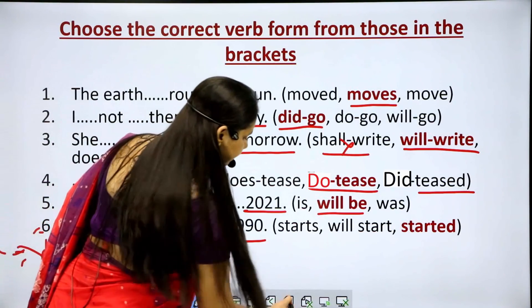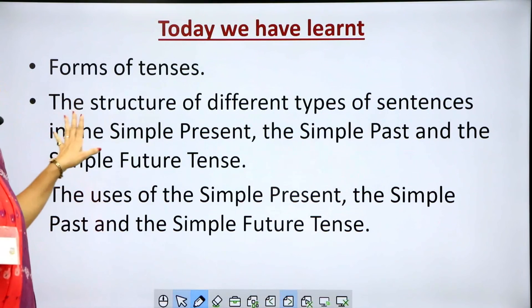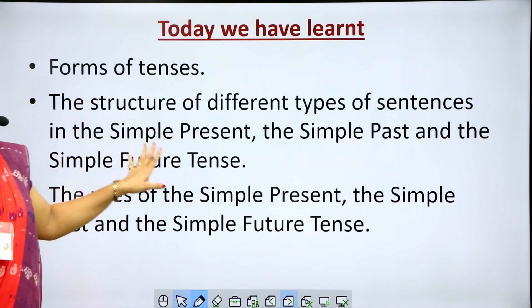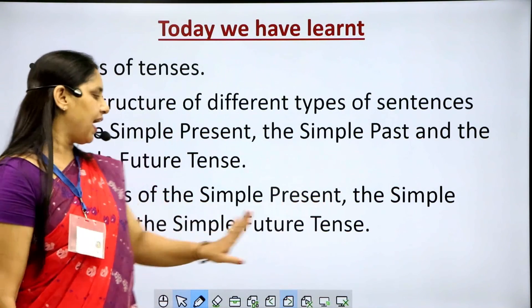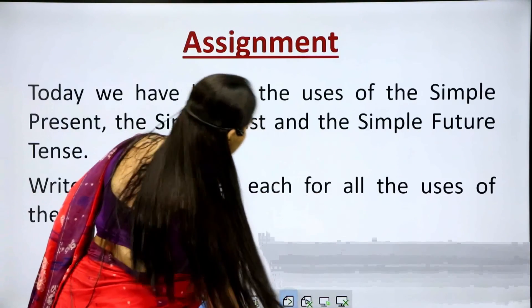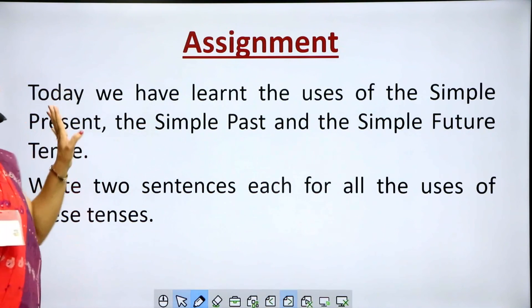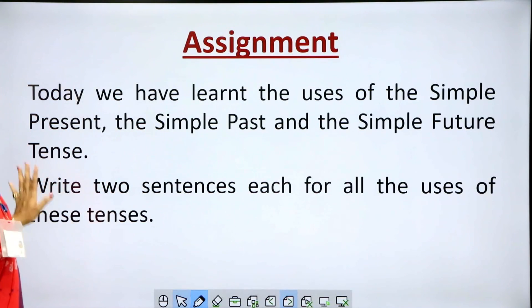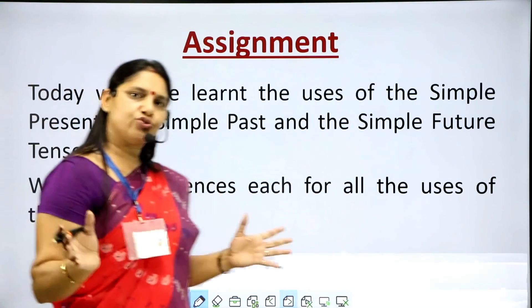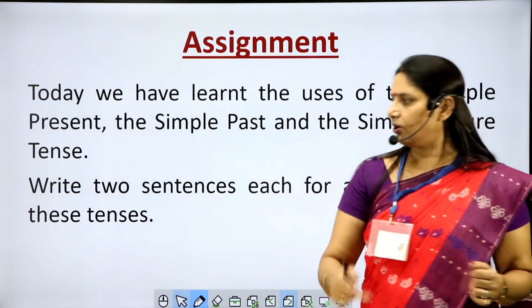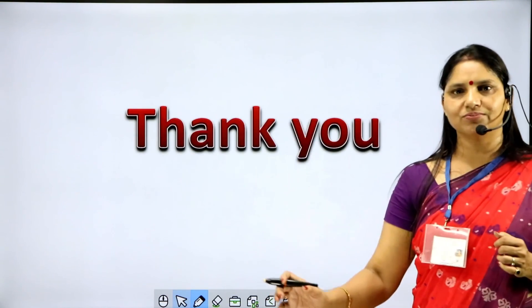Hope you have got all your answers correct. Today we have learned the forms of tenses and the structure of different types of sentences in the simple present, the simple past, and the simple future tense, as well as their uses. Here is an assignment for you: write two sentences each for all the uses of these three tenses. Thank you, and good luck for your studies.